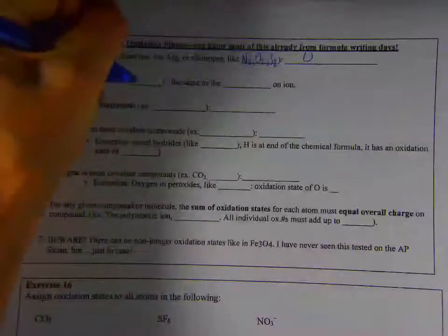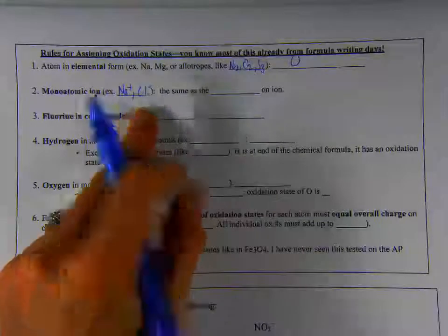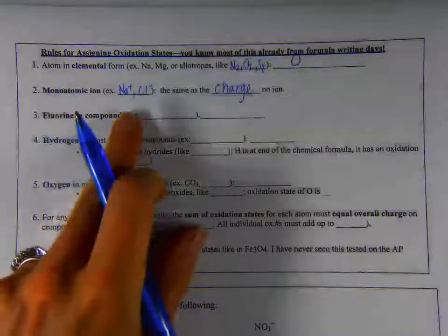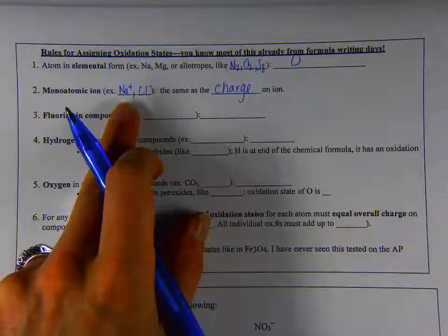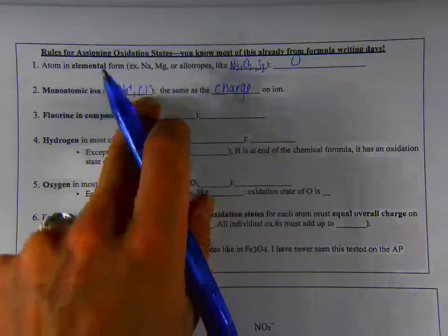Monoatomic ions, those are single atoms that are in their ion form, like Na plus or Cl minus. The oxidation state on either of these guys is going to be the same as the charge on the ion. So Na plus, it has a plus one oxidation state, just like it's plus one charge. Same for Cl minus, it would have a negative one oxidation state.